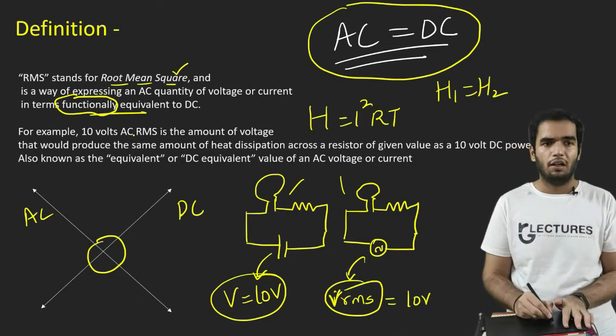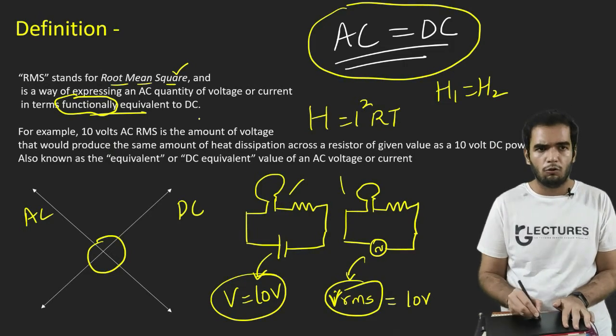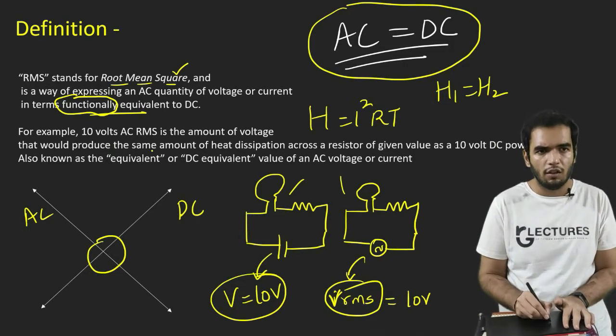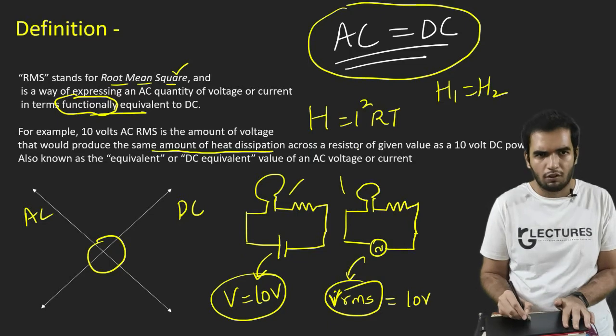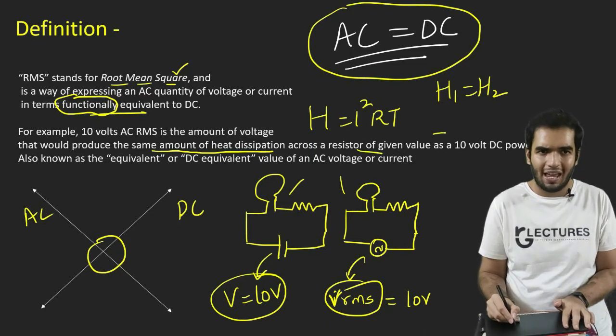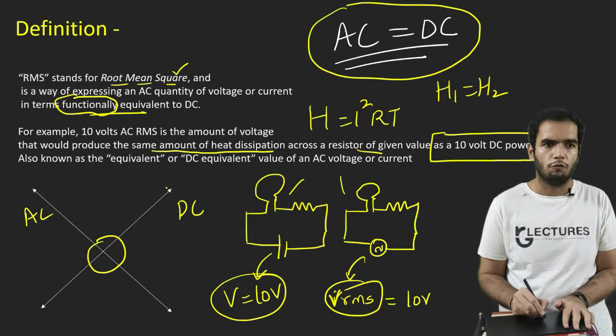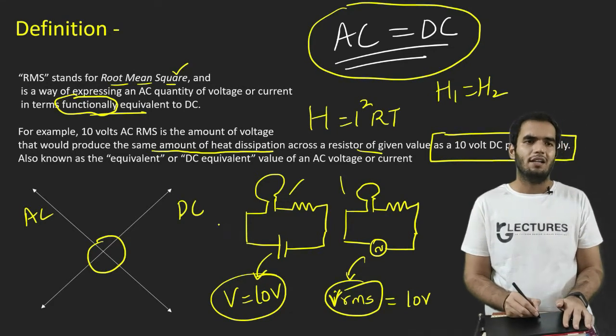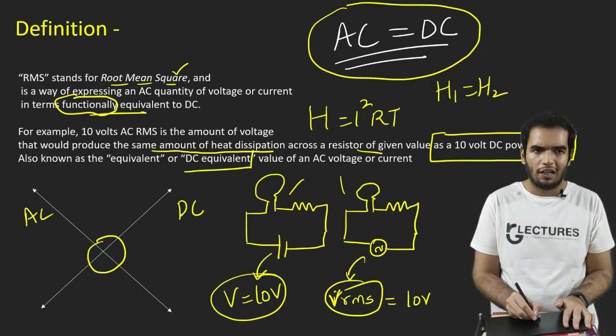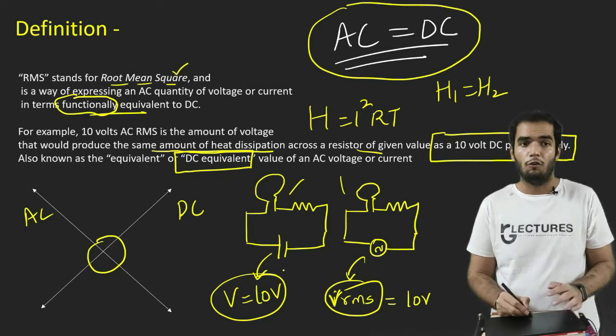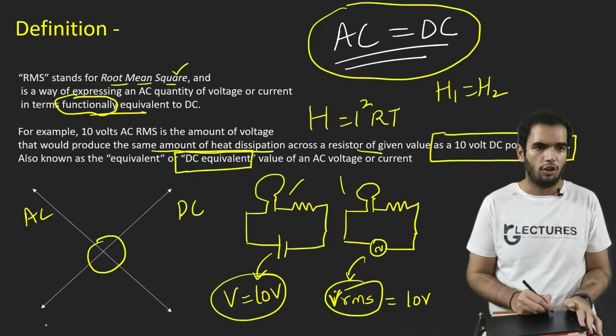So both will show the same result. The heat produced in both of these circuits will be same. So heat H1 is equivalent to heat H2. For example, 10 volt AC RMS is the amount of voltage that would produce the same amount of heat dissipation across a resistor of given value as a DC power supply will do.